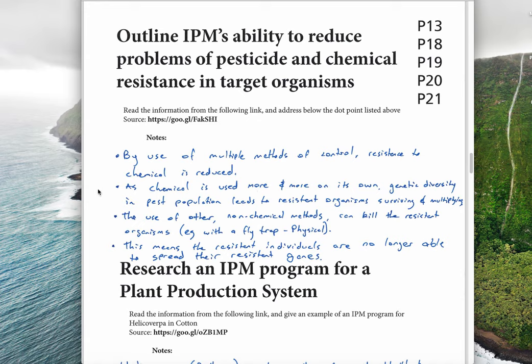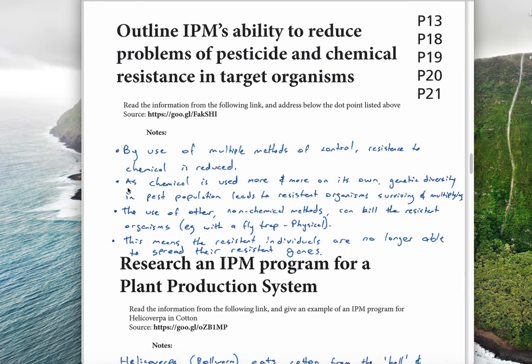You want to be able to kill those ones that are resistant with some other means. That's what IPM does well - you use some other means, whether it be biological, physical, cultural, and you kill the organism that is resistant so it can't pass on its genes. As chemical is used more and more on its own without other strategies, genetic diversity in pest population leads to resistant organisms surviving and multiplying. The use of other non-chemical methods can kill the resistant organisms. Example is a fly trap, which is a physical method that will kill flies even if they are resistant to some chemical.